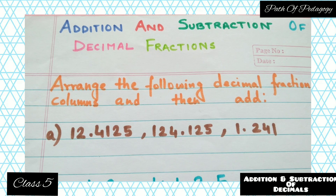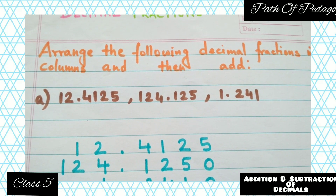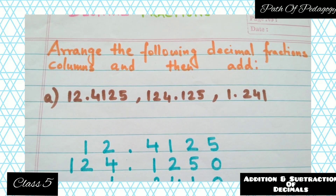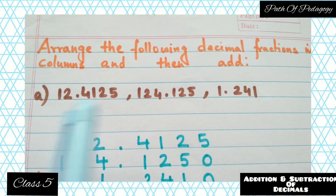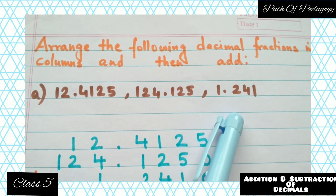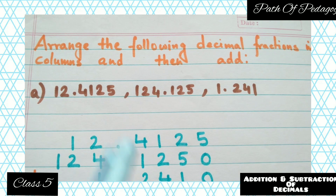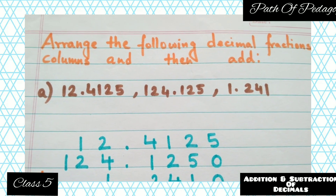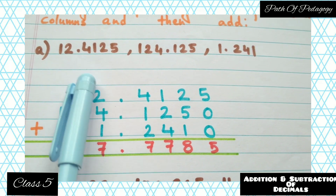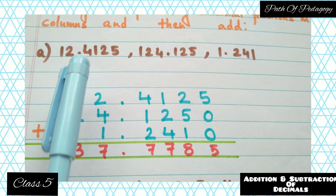Let's get started with the first question: arrange the following decimal fractions in columns and then add. Here are the decimals that are already given — you have to first arrange the decimals in columns, meaning arrange the numbers column-wise, and then add. In the case of addition, whatever numbers are given, one by one, just as they are, you have to write them down.